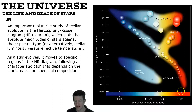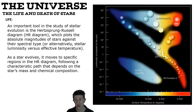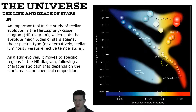Our sun is somewhere around 6000 degrees surface temperature. Remember the surface temperature is cooler than the core, where the fusion process is happening and temperatures are very, very hot.